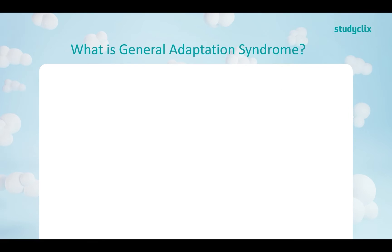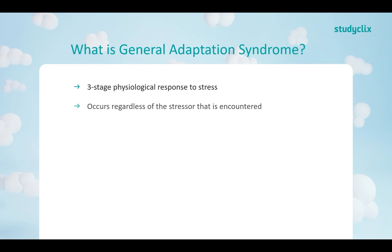So what is General Adaptation Syndrome? It's a three-stage physiological response to stress. Keyword: physiological — don't get this confused with psychological. Physiological refers to the body, and psychological to the brain. So this is our body's response to stress. This model occurs regardless of the stressor encountered, meaning that it is non-specific. Whether you see a snake, a spider, or someone jump-scares you, your body goes through the same stress response with no differentiation.